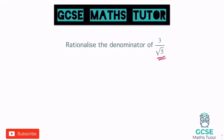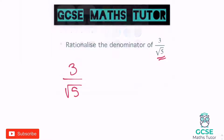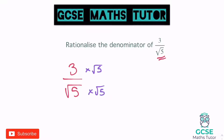There is one thing that we can times the bottom by — that root five — to ensure that we get a whole number. We can times it by root five, and that would make it root twenty-five, which turns into the whole number five. So we're going to apply this same logic and times the top and bottom by root five to make sure it's an equivalent fraction. So on the top we get three root five, and on the bottom we get root twenty-five.